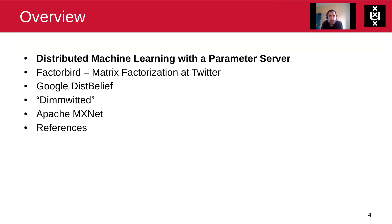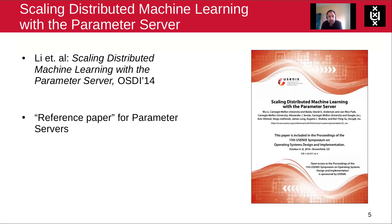We're going to start with the parameter server architecture, and in particular with one important paper that popularized this architecture called 'Scaling Distributed Machine Learning with the Parameter Server' from 2014. That is kind of the reference paper for these machine learning systems, and there's a lot of research nowadays. The first author is Mu Li, who is now a principal scientist at Amazon and leads many of their machine learning efforts in AWS. And also Alex Smola, who is a very famous machine learning researcher who pushed this architecture.